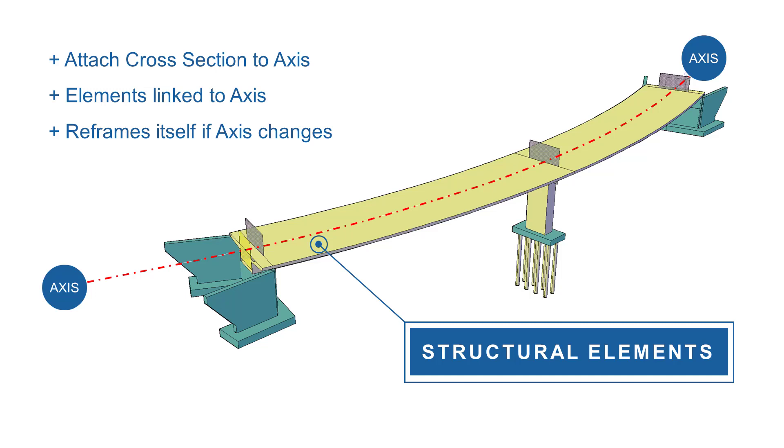We are only one click away from completing the parametric model. Creating the structural elements to the geometric axis is the last step to take. Basically, the cross-section gets attached to the axis. We have now an active link between the axis and the cross-section and any modification to the axis also applies to the structural element. This is the last step of parametric modeling of bridge structures with SOFiSTiK in AutoCAD.